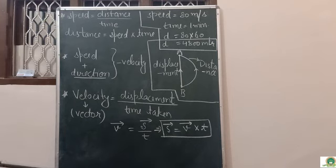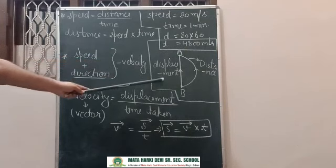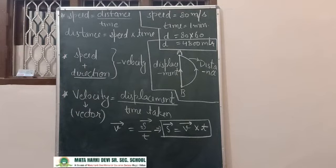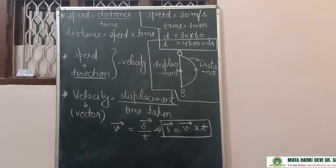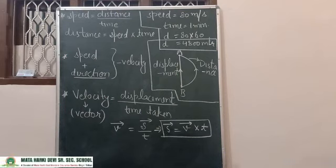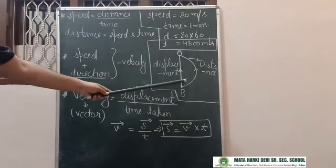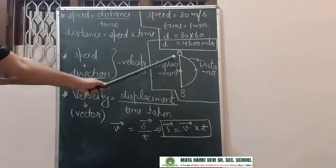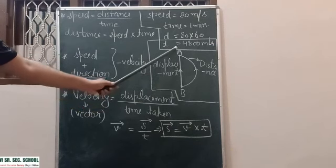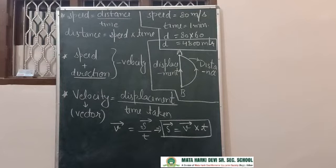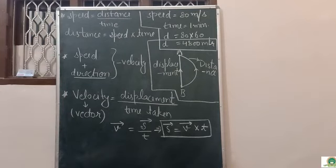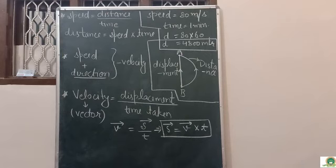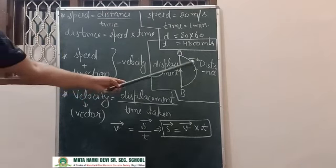Now, looking at this diagram — what is distance and what is displacement? I want you to recall these terms. Distance is the total path travelled. In this diagram, the longer route is distance. The difference between point B and point A — the shortest path — is called displacement. Displacement is the shortest path travelled by an object, and distance is the total path travelled.